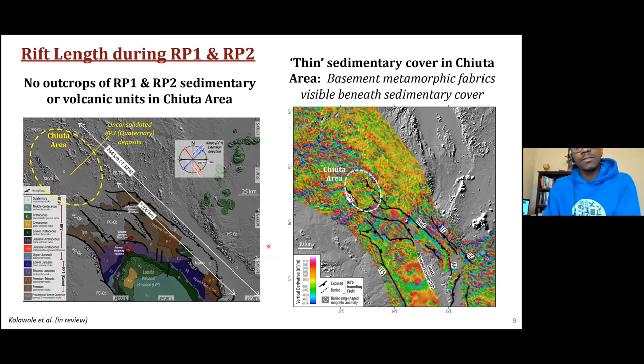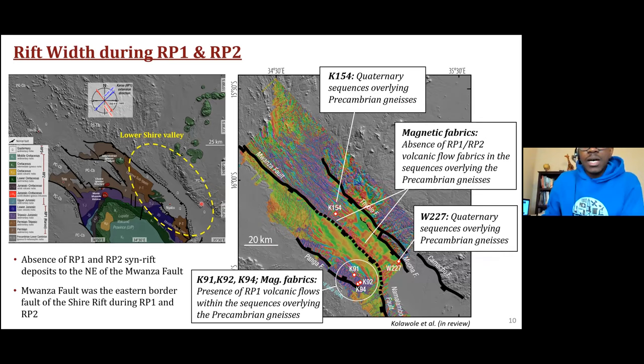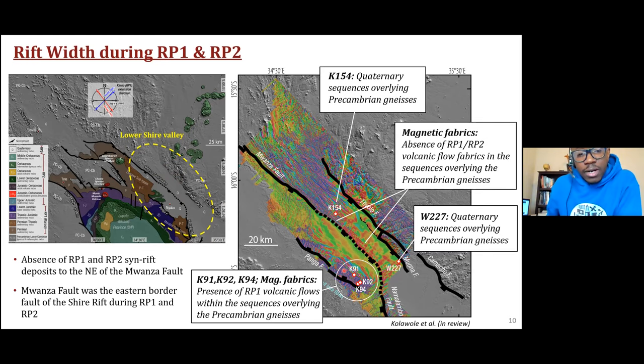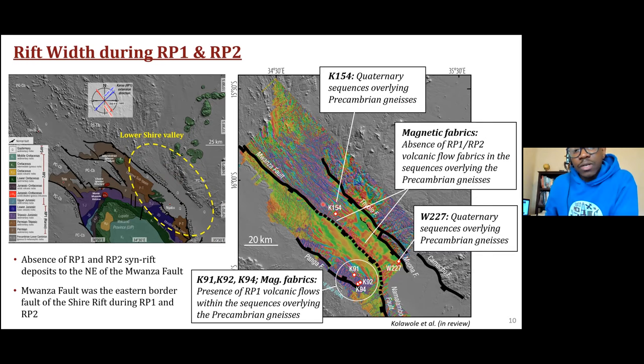Looking at the rift width: the key to answering this question relies primarily on the presence of RP1 volcanic units beneath the Quaternary cover in the lower Shirei Valley area. Aeromagnetic data shows that on the hanging wall of this buried fault segment, there are buried volcanic flows. From both aeromagnetic data and well data, we interpret that beneath the Quaternary cover we have volcanic flows here, and you can see the fabric of those volcanic flows. However, on the footwall of the fault, we cannot see that same fabric.